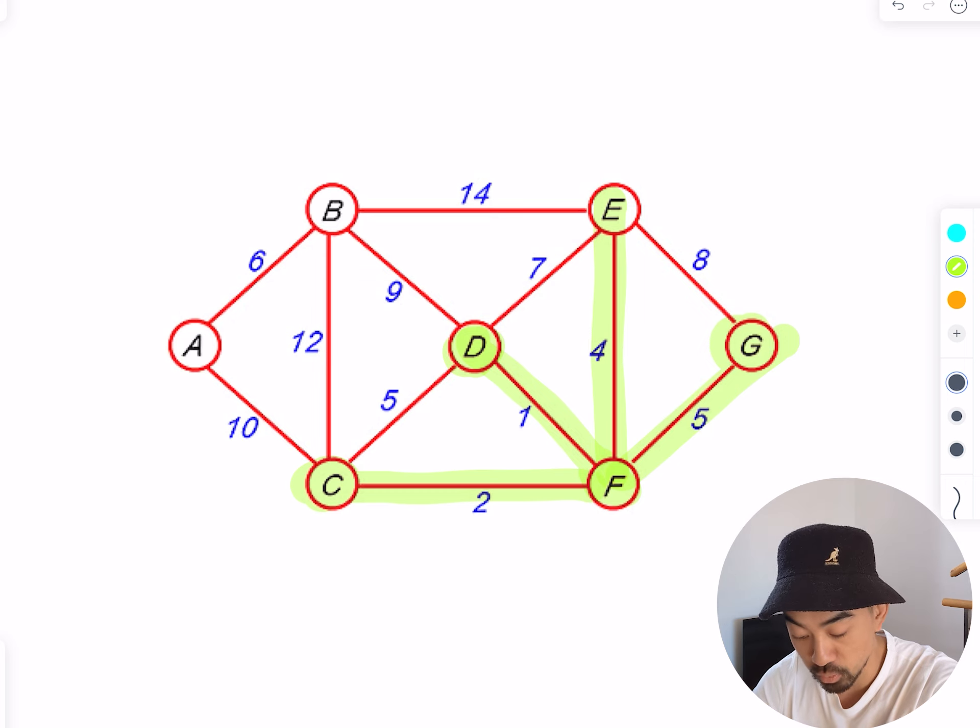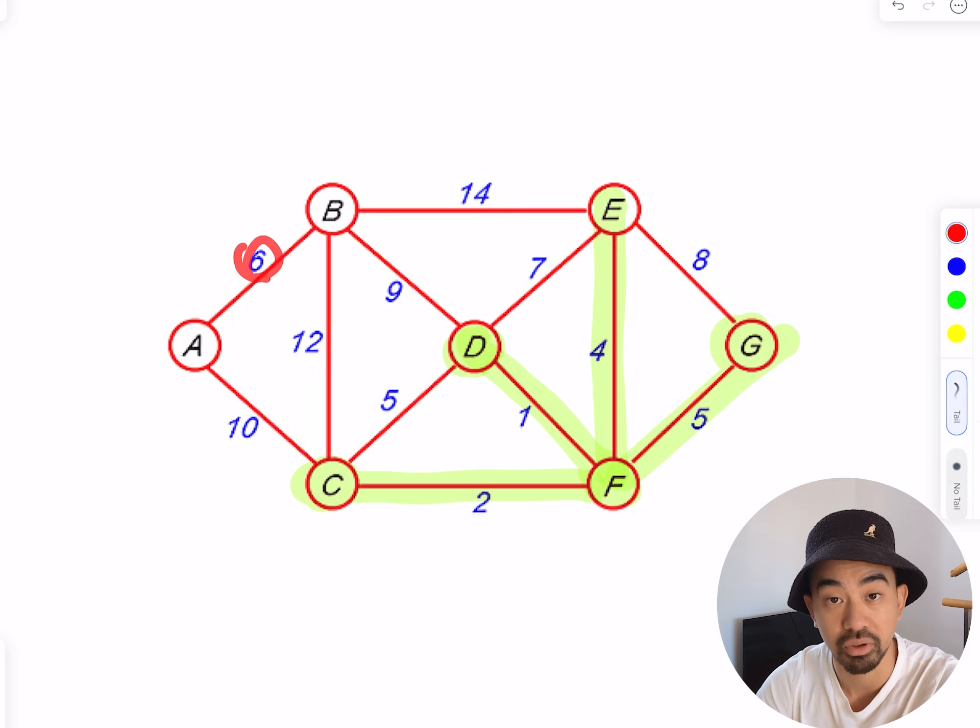Now I've got to connect the next smallest one. Here I can see it's going to be six. You can see it's all the way over here, but it's all good as long as it doesn't make a loop.